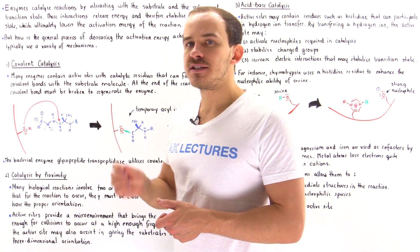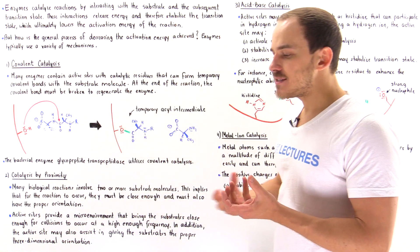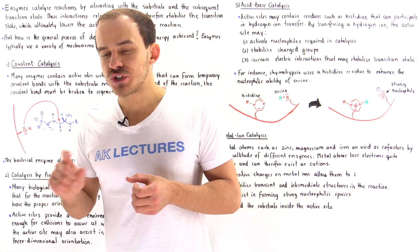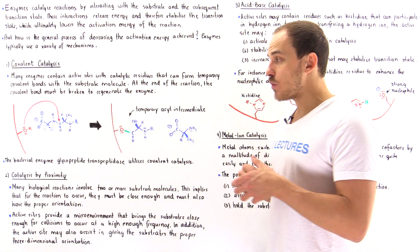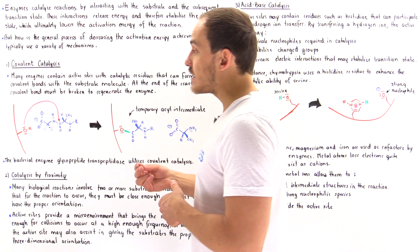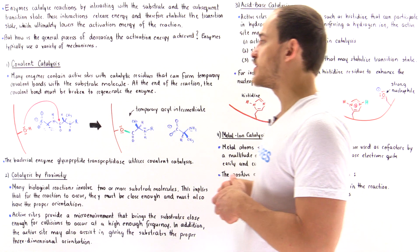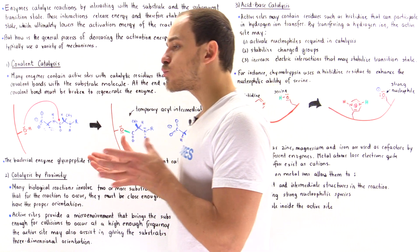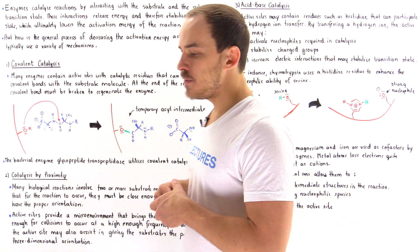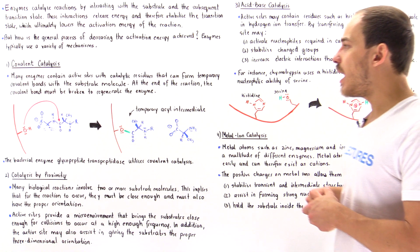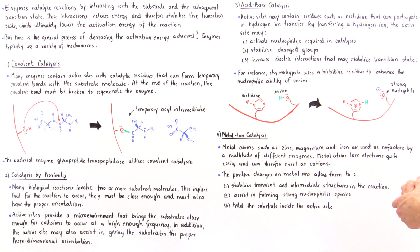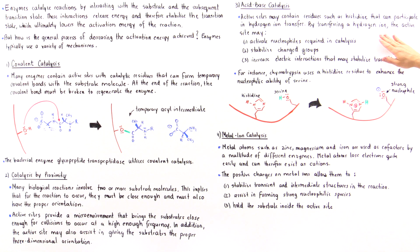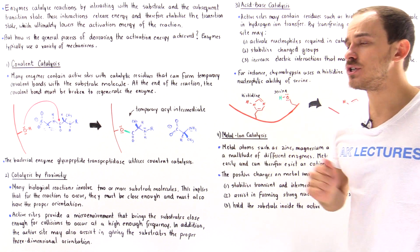Method number three is called acid-base catalysis. In acid-base catalysis, we basically have a transfer of an H ion. There are specific residues found in active sites that might be involved in the transfer of an H ion, and one specific residue is the histidine amino acid. The histidine molecule has a pKa that is relatively close to the normal physiological pH, and many enzymes inside our body utilize histidine to actually transfer an H ion.